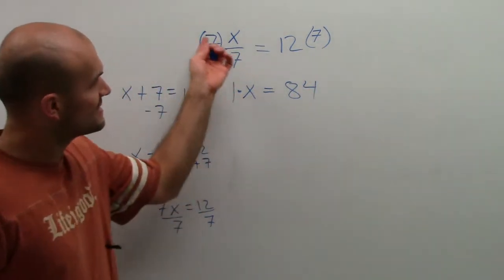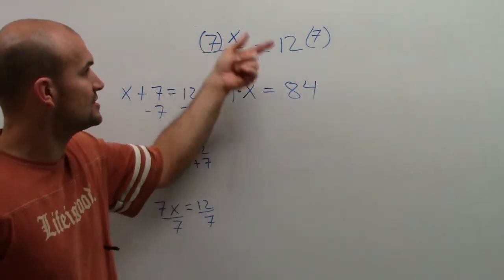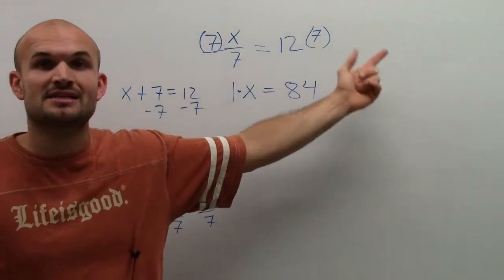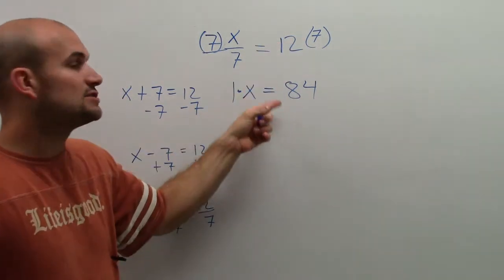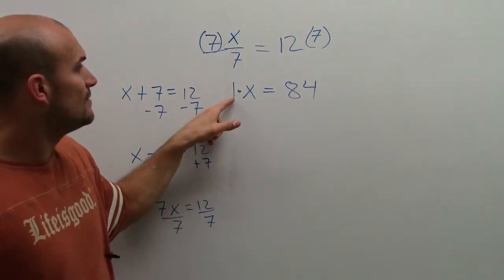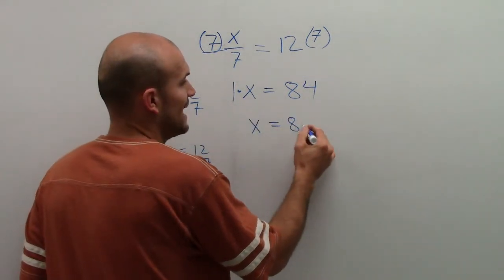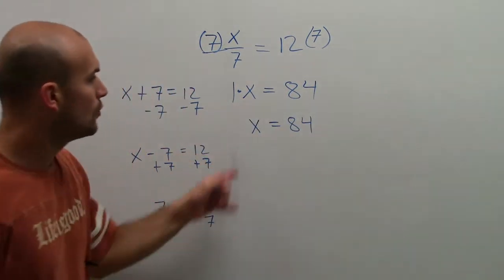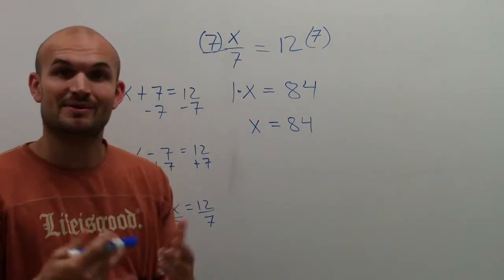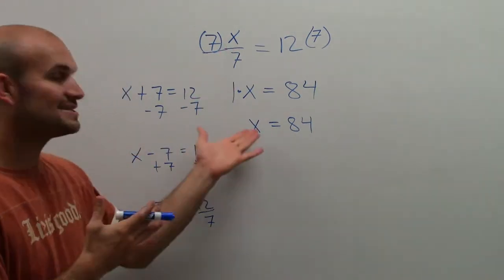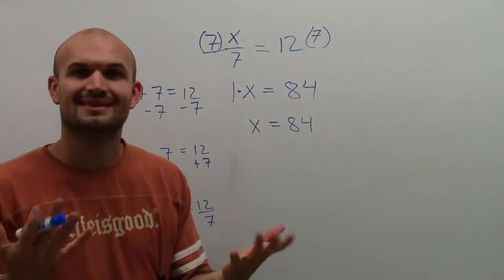I did this to isolate my variable using inverse operations, then multiplied 7 on both sides using the multiplication property of equality to produce equivalent equations. Any variable multiplied by 1 is just going to be your variable, so x equals 84, which is an equivalent equation to my original problem. That is the solution that makes my equation true.